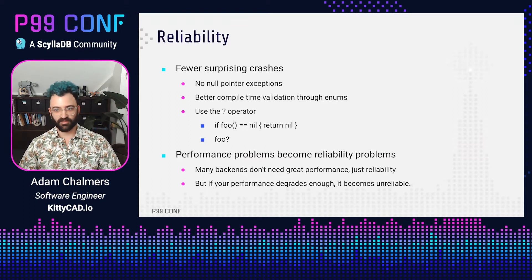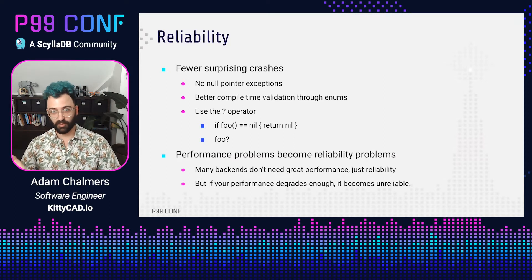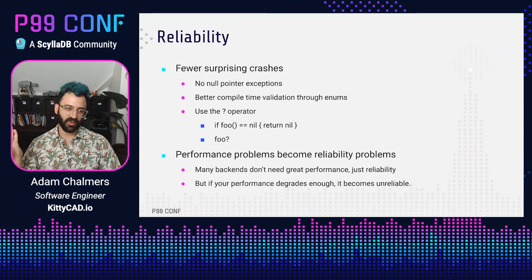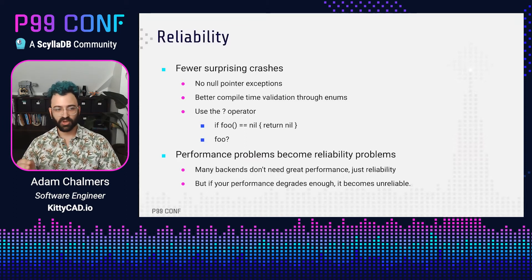Rust just doesn't crash as often because it forces you to handle potential crashes up front when you're writing your code. You can turn them into compile-time errors, when other languages will make them into runtime errors. There's no nulls, which means no null pointer exceptions or its weird cousin 'undefined is not a function' errors. Its result and option types make error handling these cases pretty easy. Generally you just use the question mark operator. If you're used to checking nil manually, like 'if foo equals nil return nil' in other languages, you can just put a question mark at the end — kind of like Swift — and handle the error by propagating it upwards to the caller.